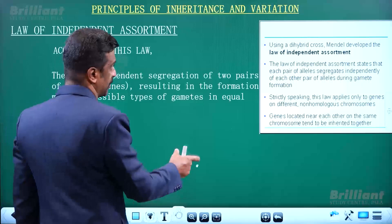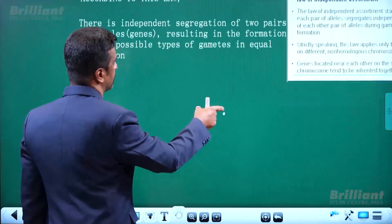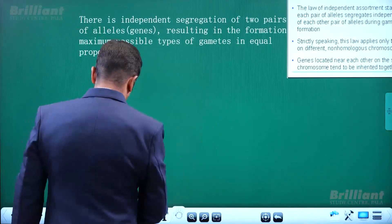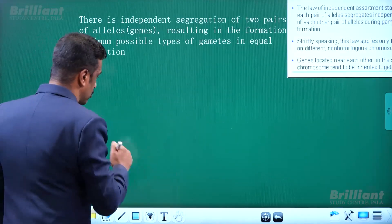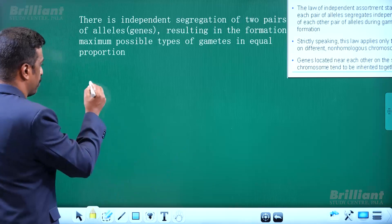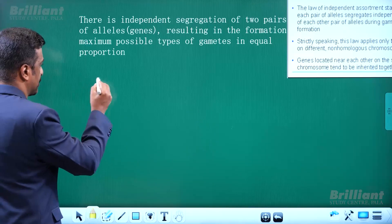The previous generation of pairs of alleles — two pairs of alleles. When you consider two pairs of alleles, their segregation is independent.